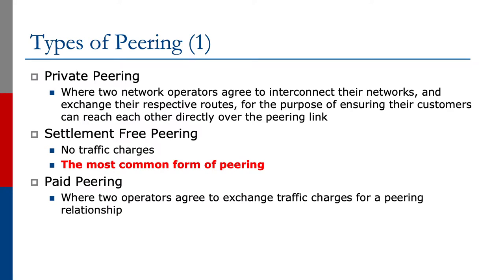We will now look at the different types of peering. Private peering is where two network operators agree to interconnect their networks and exchange their respective routes, ensuring that customers can reach each other directly over the peering link. Settlement-free peering is where there are no traffic charges and is the most common form of peering on the internet today.